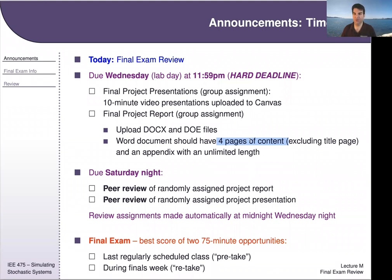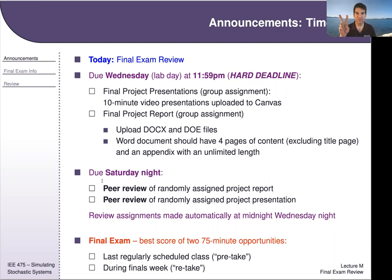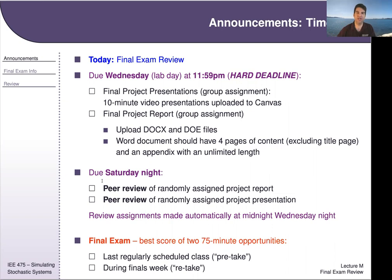Get everything submitted by Wednesday at 11:59 PM. Then at Wednesday midnight, Canvas will randomly assign you one project report and one presentation from another group. This is an individual assignment. From Wednesday midnight through Saturday night, you do a peer review: watch the 10-minute video, fill out the rubric, add a constructive comment, and submit. It's totally anonymous.